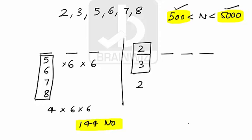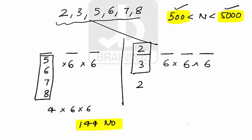Since repetition is allowed, all 6 digits can fill each of the remaining three places. So we multiply: 2 × 6 × 6 × 6 = 432 numbers. These are the 4-digit numbers which are less than 5000.